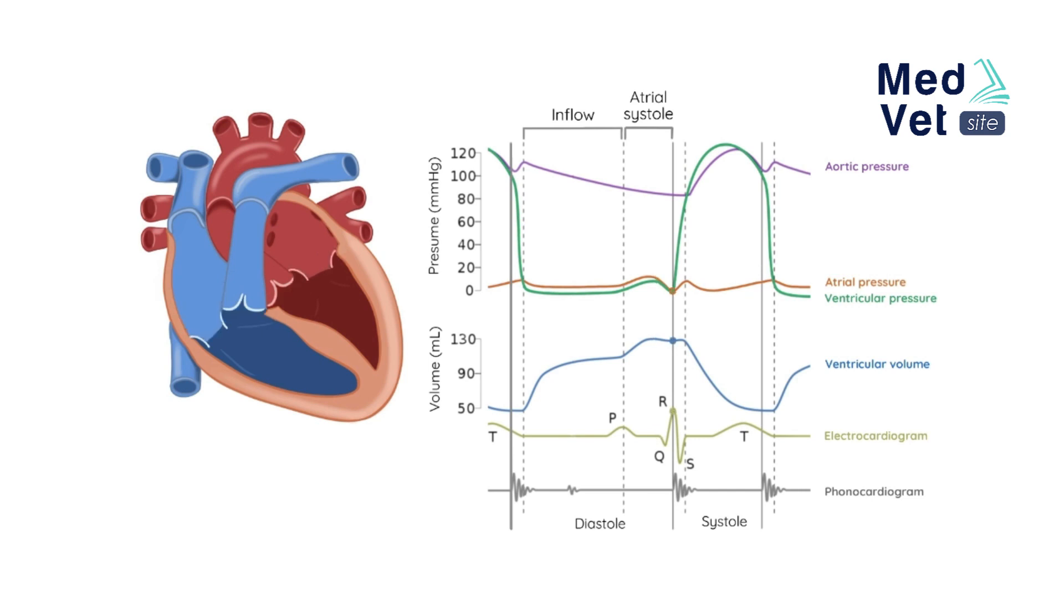The pressure in the ventricle becomes greater than that in the atrium, causing the atrioventricular valve to close, which causes the first noise or S1. This is how the ventricular filling stage ends with an end diastolic volume of approximately 130 milliliters.